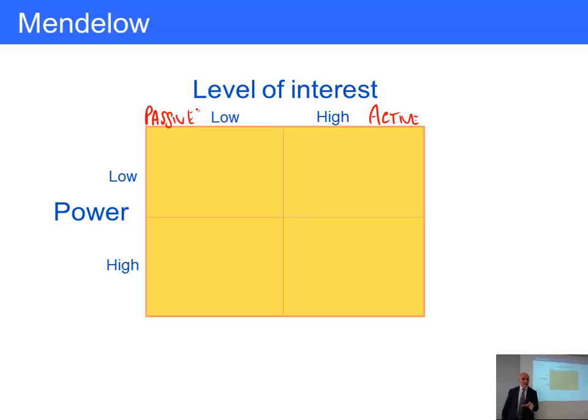The first one is really easy. It's out here. High power and high interest. These are called key players.